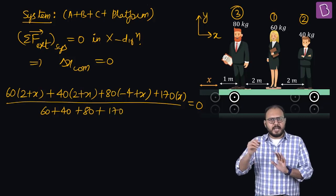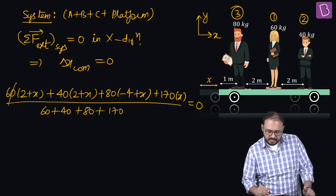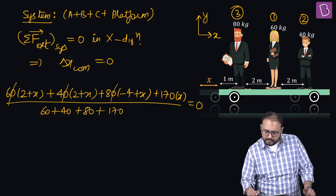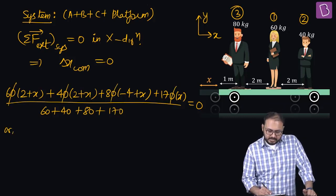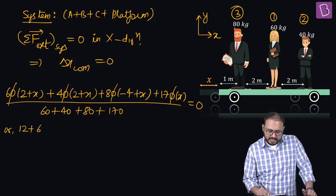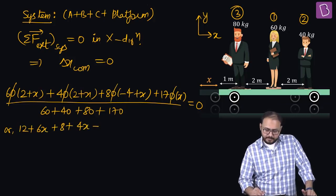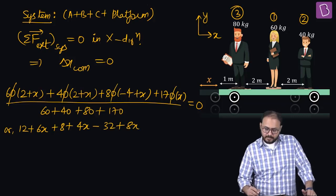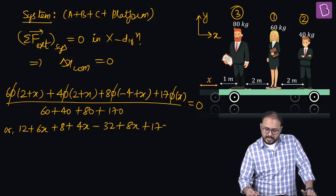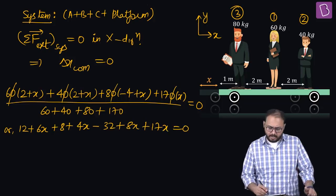Cross multiply, zero satisfied. Can I cancel all the zeros? Open the brackets: 6 times 12 plus 6x first bracket, 8 plus 4x second bracket, minus 32 plus 8x third bracket, and this guy is 17x equal to zero.